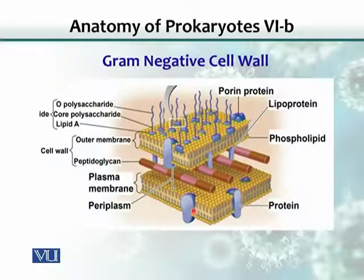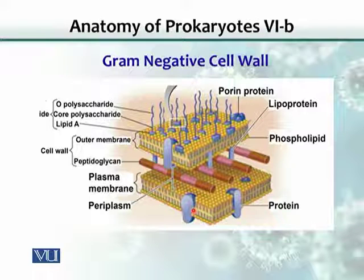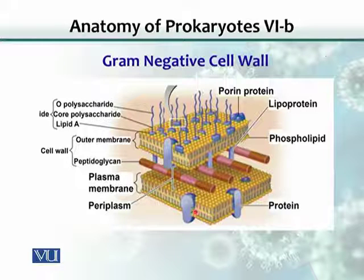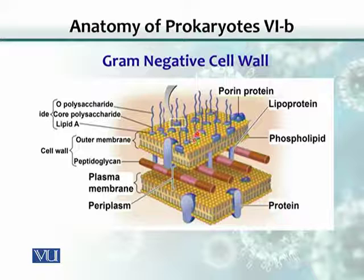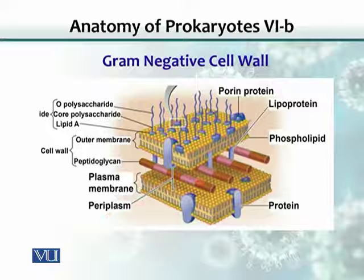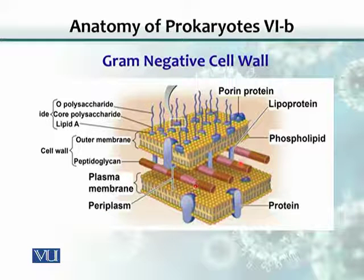This is the cell wall of a gram-negative bacteria. As you can see, there are two cell membranes. This one here is called the inner plasma membrane or cell membrane, and this one here is the outer cell membrane. Between the two, there is a space called the periplasmic space, and within this periplasmic space there is a thin wall of peptidoglycan.